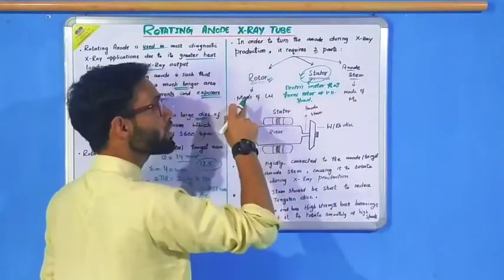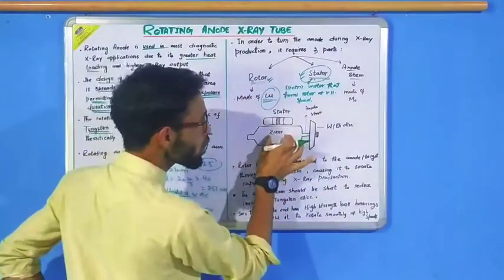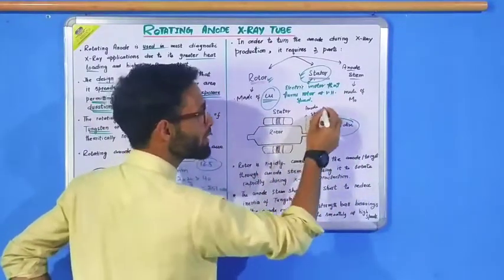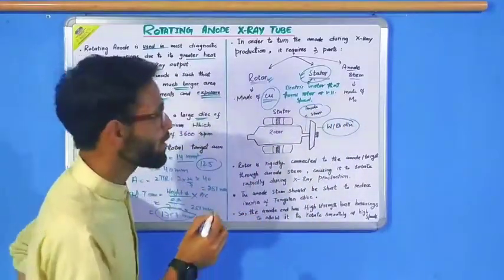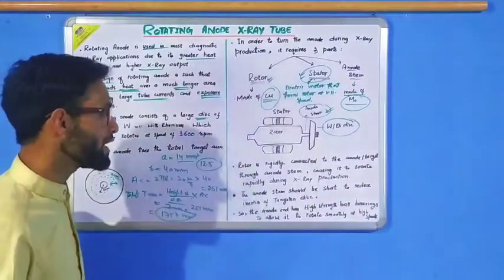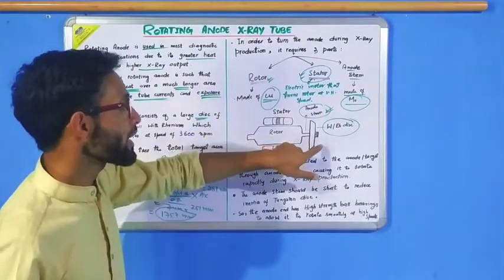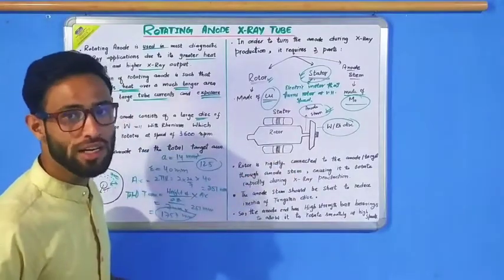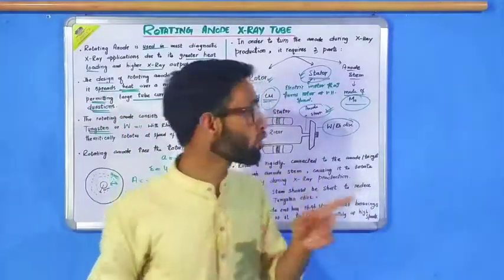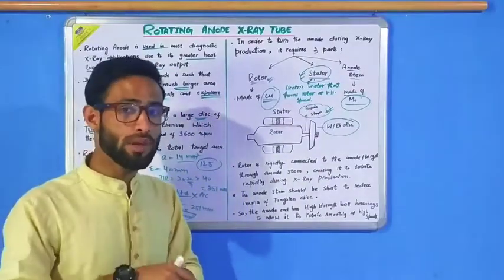The rotor itself is made of copper — a very important point: the rotor is made of copper. The rotor is connected to the tungsten disk by a small rod called the anode system. The anode system is made of molybdenum. Because the rotor is rigidly connected to the tungsten disk through the anode system, the tungsten target rotates easily during x-ray production.